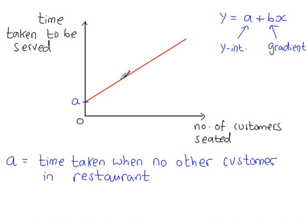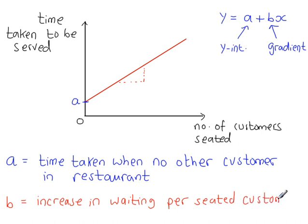b is the gradient. So b is the increase in time taken per additional customer seated. So b equals increase in waiting time per seated customer.